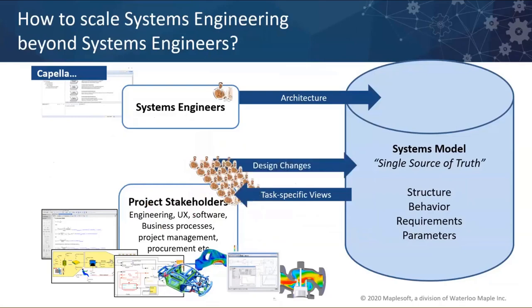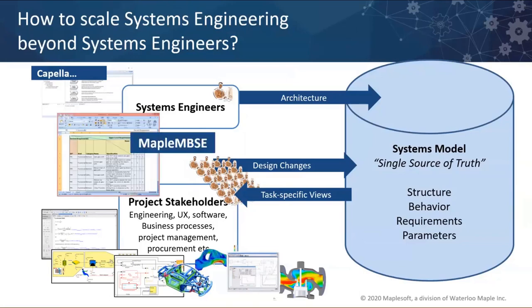Our proposition is: in order to smooth out that friction and keep all the stakeholders engaged, why not give them direct access to the systems model so they can take information in a view specific to the work they're doing? Any information required to go back into the systems model can be fed directly in. But don't force them to use systems engineering tools like Capella — just give them a standard office tool: Excel. Everybody knows and understands Excel, and most tasks can be expressed in a tabular view. That's really what drove us to develop Maple MBSE.